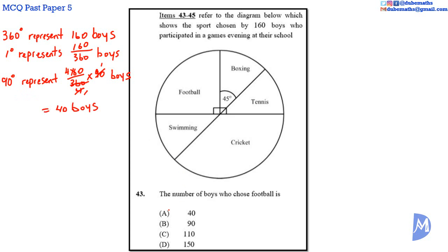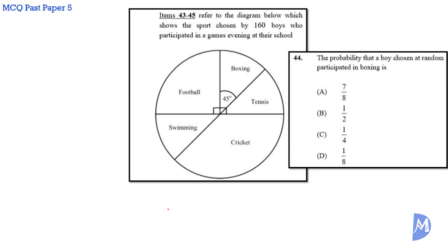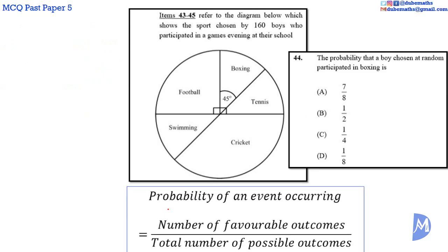The answer is A. Question 44. The probability of an event occurring is equal to the number of favorable outcomes over the total number of possible outcomes — that is, the number of boys participating in boxing over the total number of boys. Boxing takes up 45 degrees and the total is 360 degrees, so the probability is 45 over 360, which is the same as 1 over 8. The answer is D.